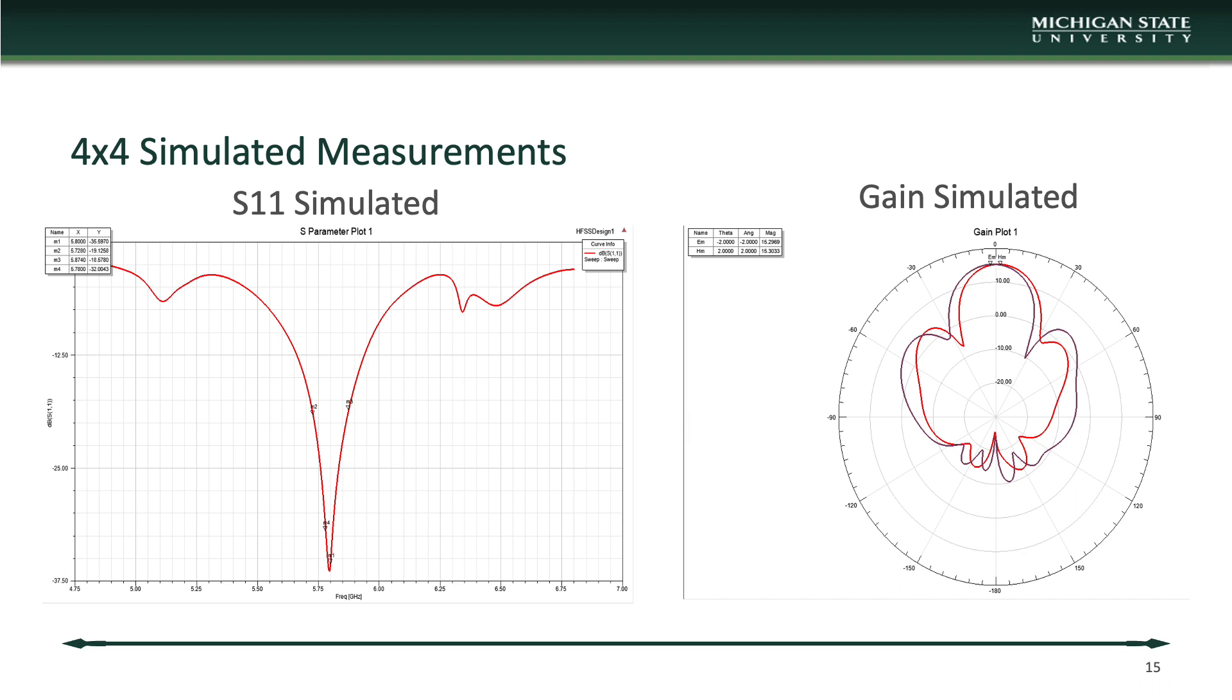For the 4x4 array, similar results could be observed, but to a greater magnitude. The S11 reaches a null of almost negative 37.5, precisely at 5.8 GHz, which made it very useful for us, especially as a transmitter. We can see the gain pattern is more focused than the previous 2x2 array, with a gain of 16.2 dBi, much stronger than the 10.6 dBi we saw before, which made it more ideal to use as the transmitter as opposed to a receiver.